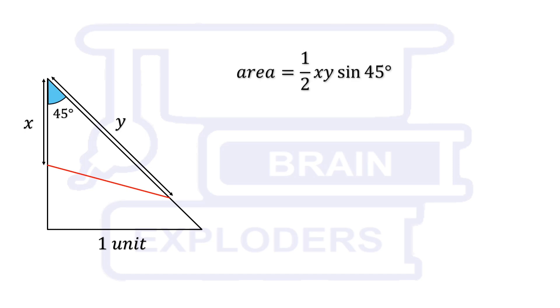Using the discussed formula for the area of triangle, we can write area equals to half xy times sine 45 degrees. This gives us a relation between x and y so we can substitute the value of y in terms of x.